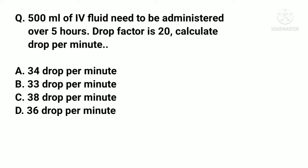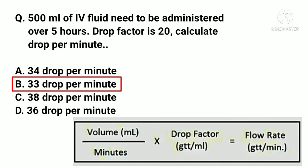500 ml of IV fluid needs to be administered over 5 hours. Drop factor is 20. Calculate drops per minute. Options: A. 34, B. 33, C. 38, D. 36 drops per minute. The correct answer is B. 33 drops per minute. Drop per minute equals volume multiplied by drop factor divided by time in minutes.